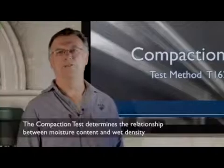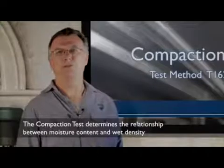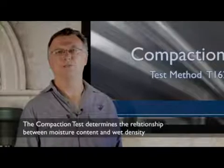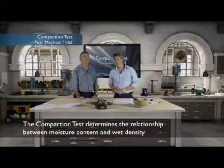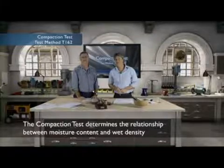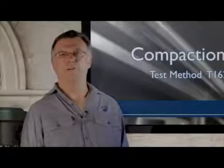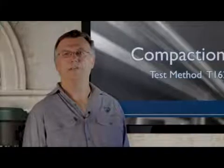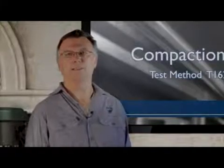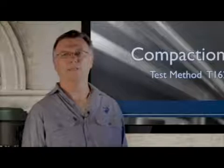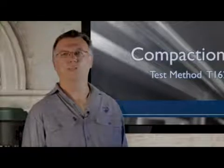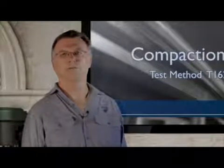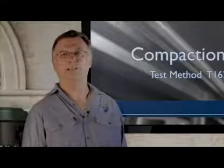The compaction test is used to determine the relationship between moisture content and wet density of road construction materials. In layman's terms, it's a laboratory method of finding the optimum moisture content at which a given soil type will become most dense and achieve its maximum wet density. Thus, this test determines the laboratory maximum wet density of that material, with which the field compaction can then be compared.